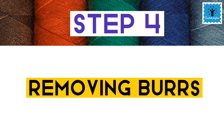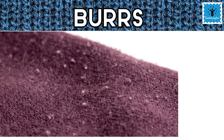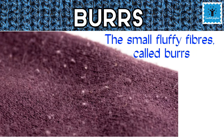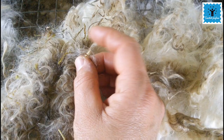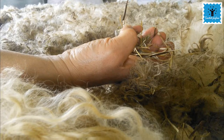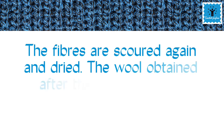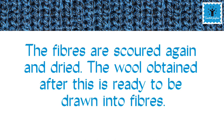The fourth step is removing burrs. In woolen clothes, you sometimes see soft fluffy ball-like structures growing on them — these are called burrs. These burrs are picked out from the hair. After this, the hair is washed and dried again, and is now ready to be drawn into fibers.